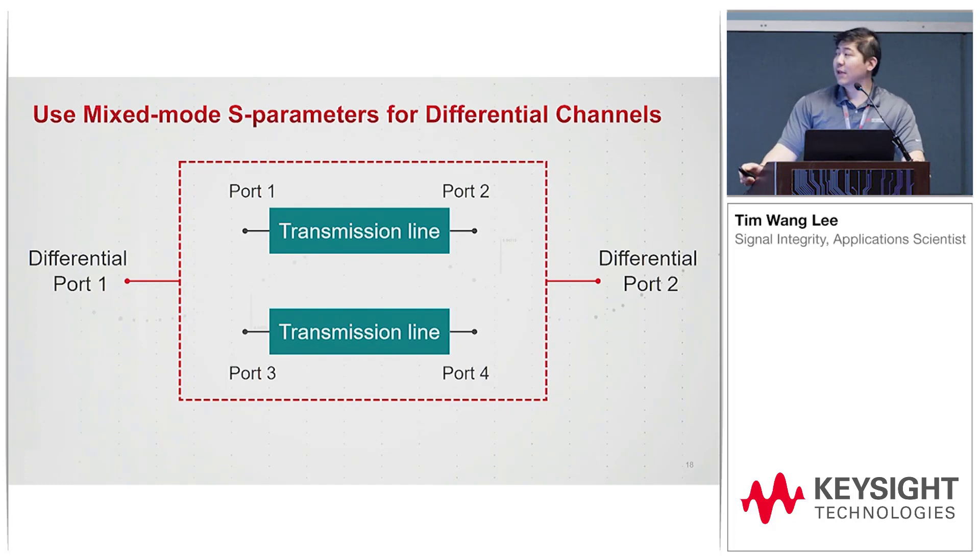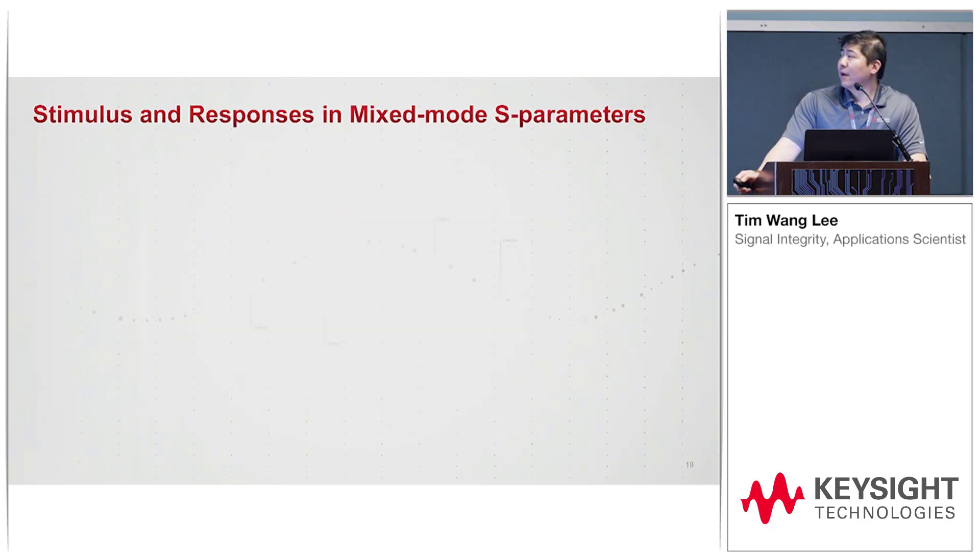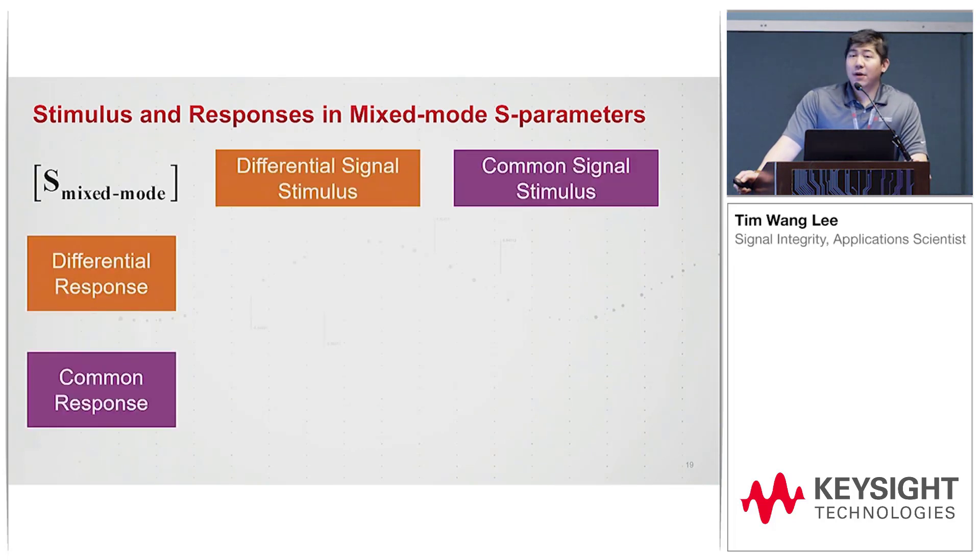If you have a different naming convention, by looking at the mixed-mode S-parameters, we'll be talking about being differential and being common: DD differential and DD common, all the common signals and all differential signals. Here are a quick matrix overview of what it looks like.